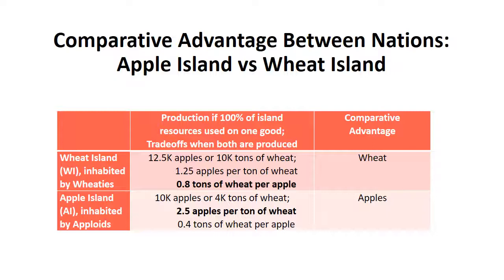In the second column of the table here, if each island specializes in producing only one good — there are two goods, apples and wheat — Wheat Island could produce 12,500 apples or 10,000 tons of wheat if it specialized in one of the two. Conversely, Apple Island would produce 10,000 apples or 4,000 tons of wheat. One thing to notice is that Wheat Island is more productive in absolute terms in both goods, so they have an absolute advantage in producing both apples and wheat.